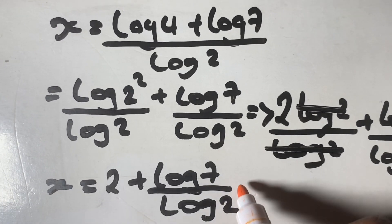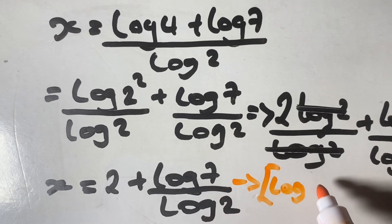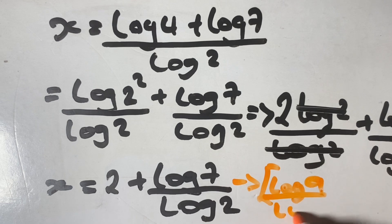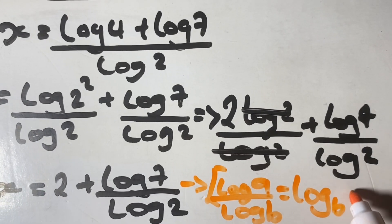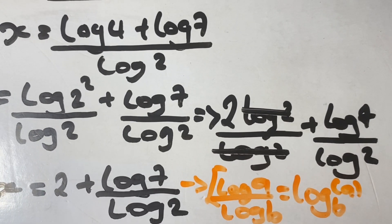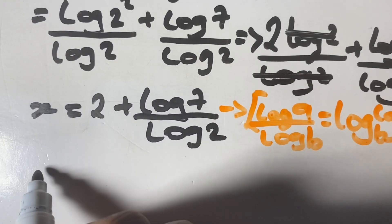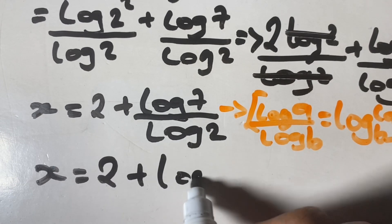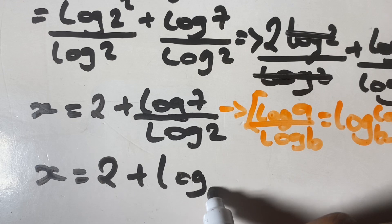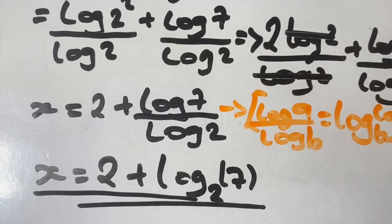Using our change of base rule, log a over log b is the same as log base b of a. So that leaves us with x equals 2 plus log base 2 of 7. And this is our solution for x.